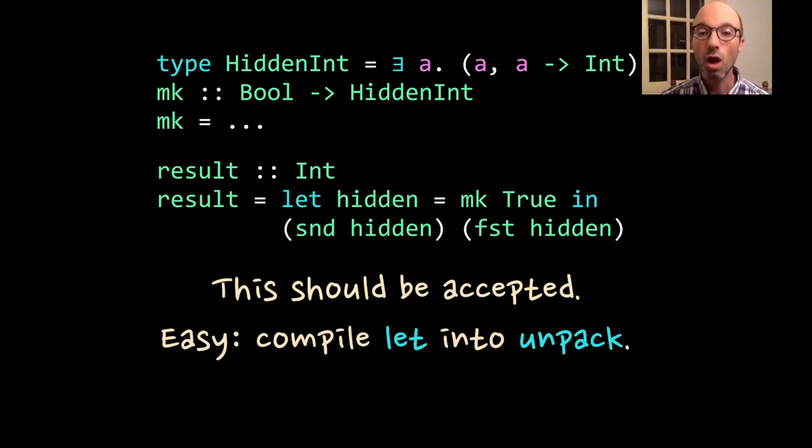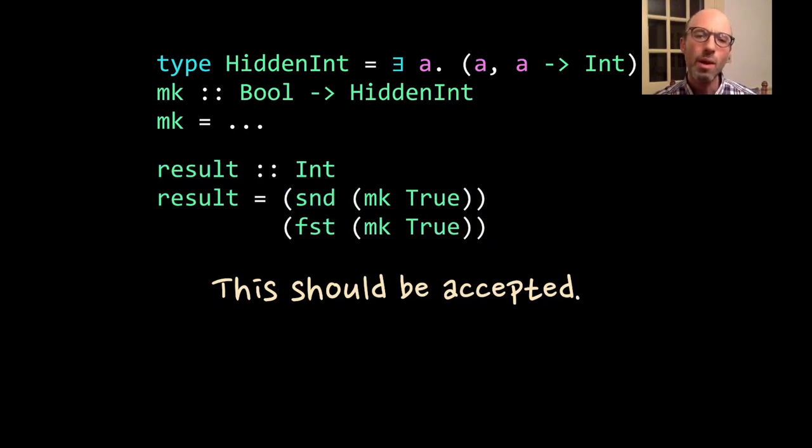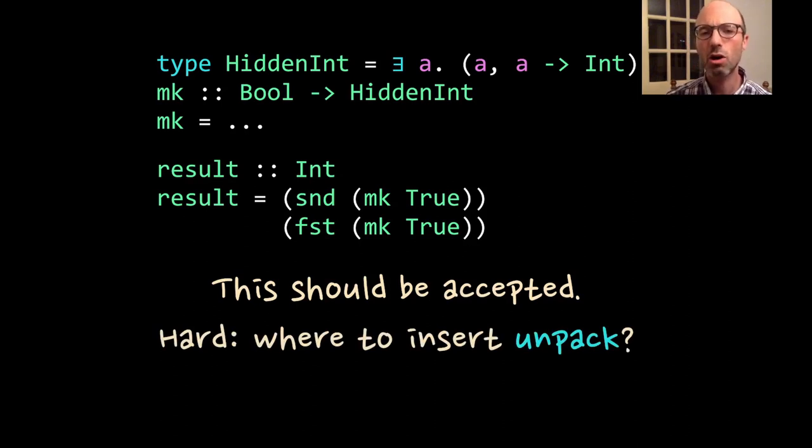I can compile let into unpack. I can use let and say, okay, let's just take this existential. We'll make this A available inside the scope of the let. But now, suppose I want to rewrite my program by doing a little let inlining. Instead of saying let hidden equals mook true, I just want to repeat mook true twice where I previously wrote hidden. That should still be accepted. I should be able to inline my let. Yet now the unpack is much harder. It looks like I would need to insert the unpack surrounding this whole result, which now is going to affect my runtime evaluation again. So this is problematic.